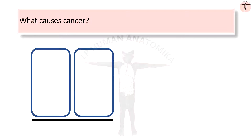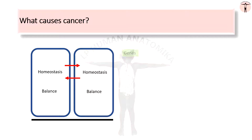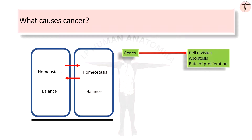Normally, cells communicate with neighboring cells to maintain homeostasis and balance between cell division and cell death. In cancer, this balance is disrupted and the cell starts growing without any control. There are genes which control cell division, apoptosis, and rate of proliferation.